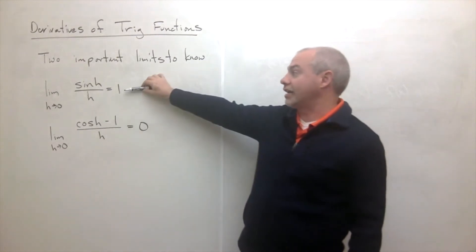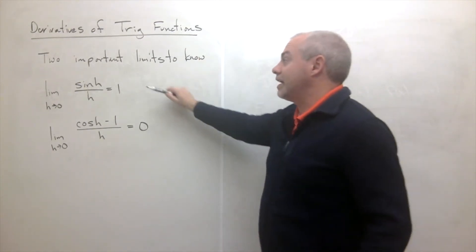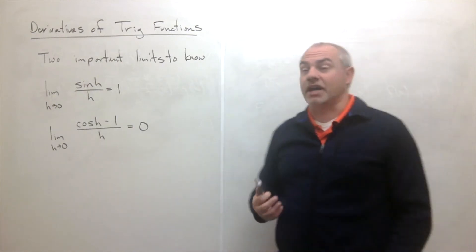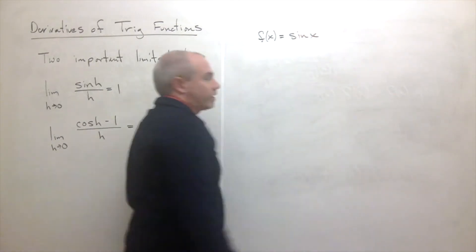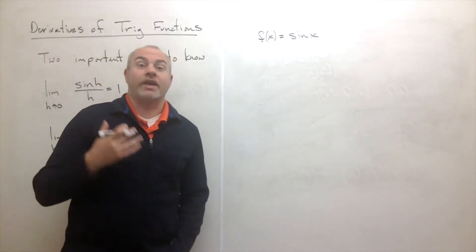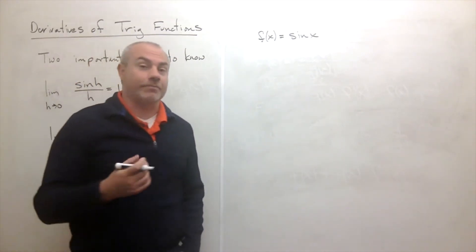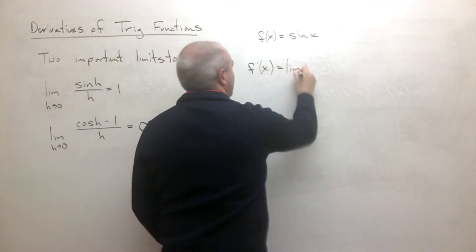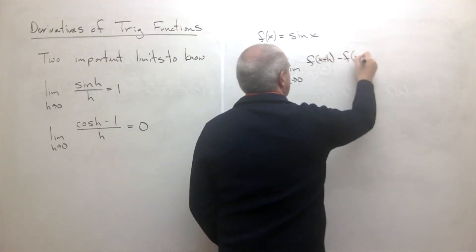Assuming we've established those two facts, let's go through and find the derivatives of the different trigonometric functions. Let's start with sine of x. So let f of x equal sine of x. Any time we don't know what a derivative is, we go back to the actual definition: f prime of x is the limit as h goes to zero of f of x plus h minus f of x, all over h.